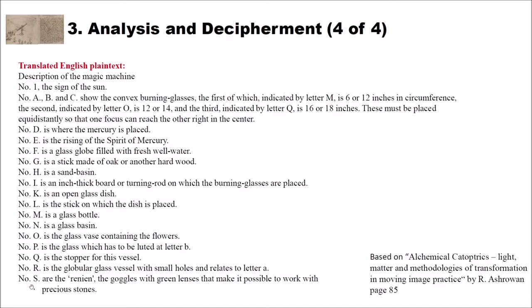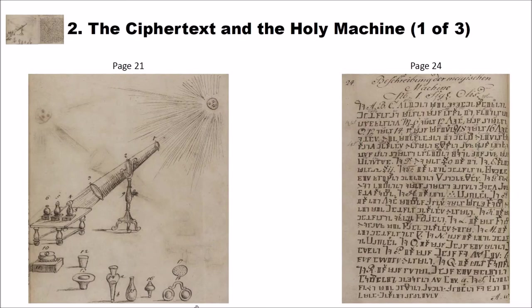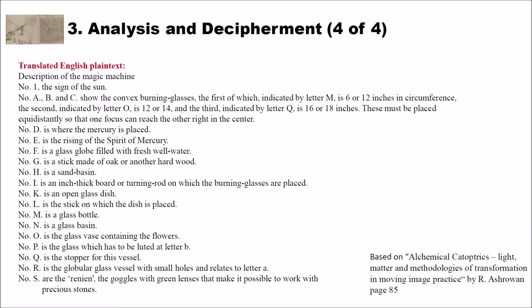And here, the last sentence or the last part in that description or enumeration that describes the machine is, as are the Iranian, I don't know what this is, the goggles with green lenses that make it possible to work with precious stones. And when we go back to the picture or the figure of our machine, we can actually see here number 18. And these are the goggles, the glasses. And as I said, you have here the number 18, these here are green glasses.